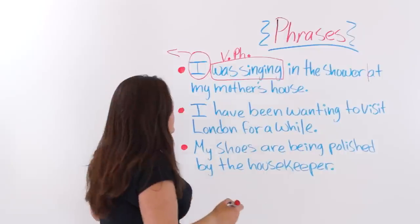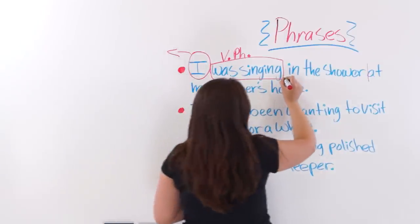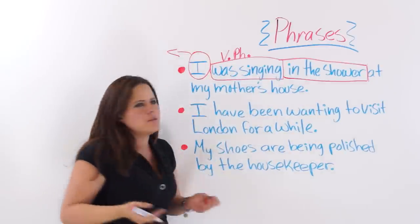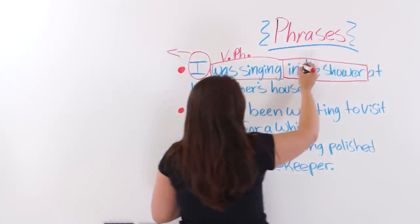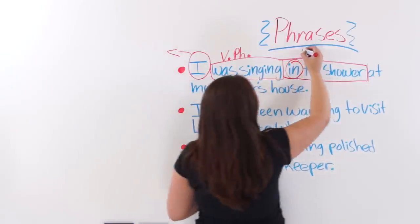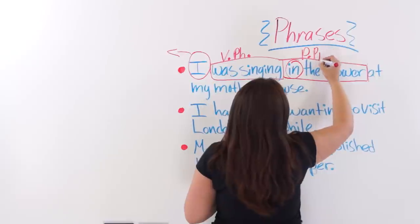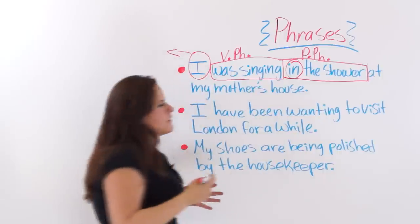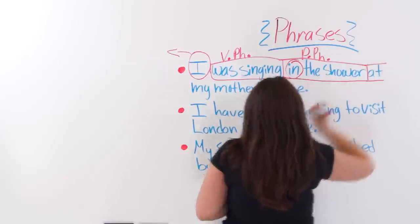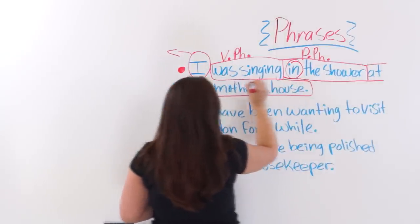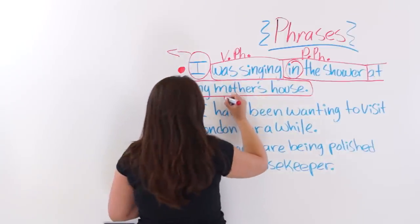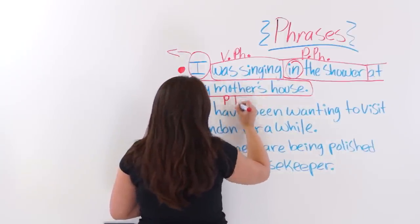In the shower at my mother's house — the next phrase is 'in the shower'. We know it's a prepositional phrase because we have the preposition 'in'. So this is a prepositional phrase. And the next part of the sentence, 'at my mother's house', is also a prepositional phrase.